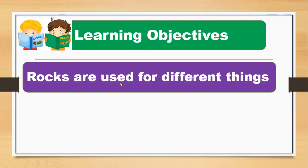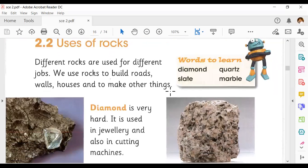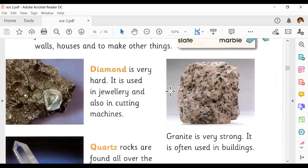Let's talk about our new lesson, lesson number two. Today we will study about how rocks are used for different things. Yesterday you learned about types of rocks, and today you are going to learn how we use rocks to make different things. Here is your lesson in your books — can you see it? There are some pictures.